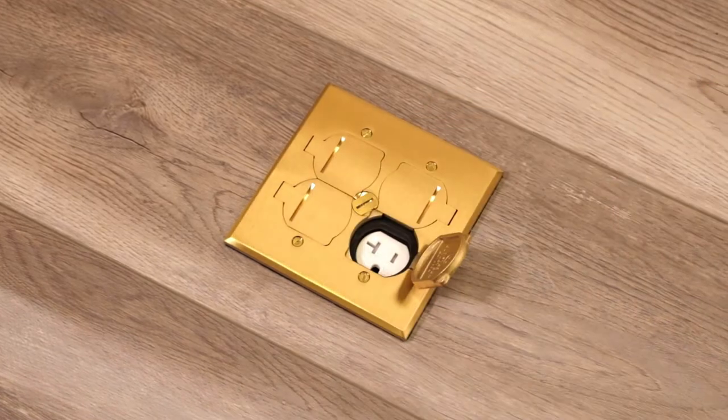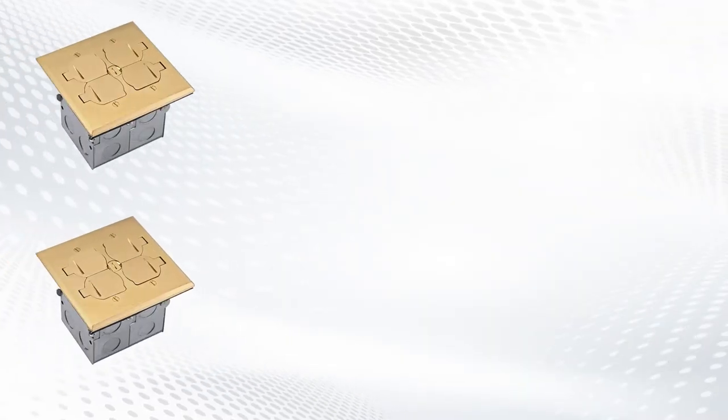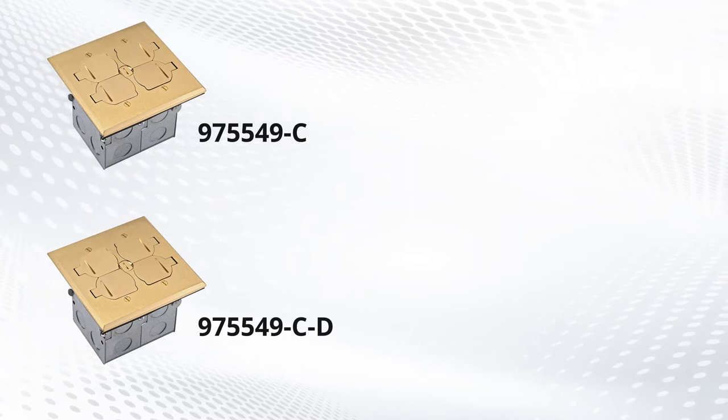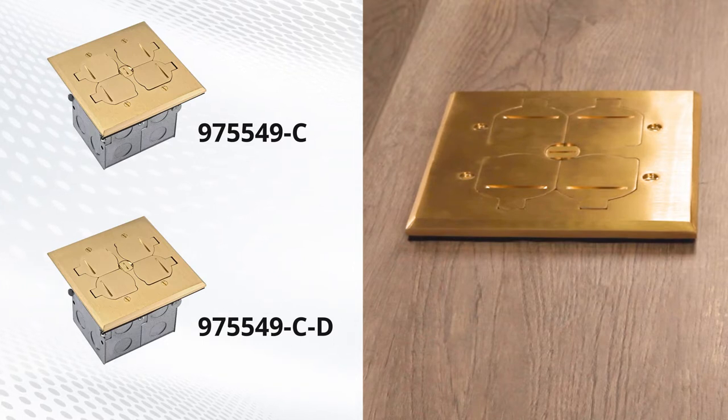Use a floor box to bring power or data connections to any given space. The Enerlite Surface Mounted Flip Lid 2-Gang Floor Box can be installed in new construction or retrofitted into any indoor floor use scenario.